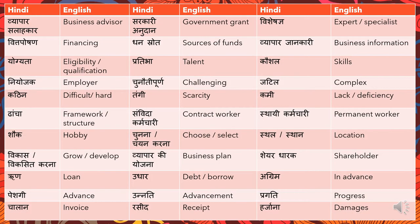The first word in this series is 'vyaapar salahakar.' Vyaapar is nothing but 'business' and salahakar, like we saw in the previous videos, means 'advisor.' So vyaapar salahakar is 'business advisor.' Next is 'sirkari anudan.'